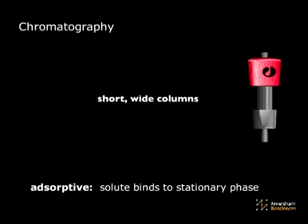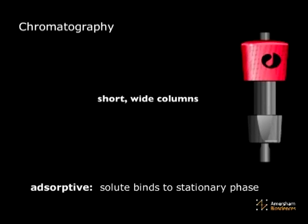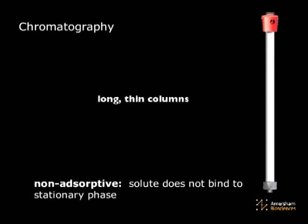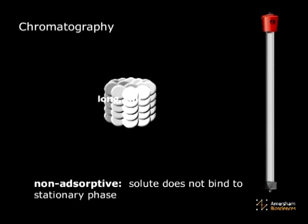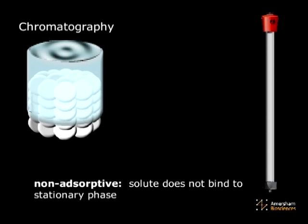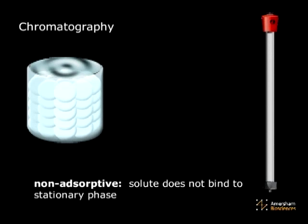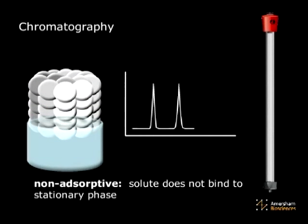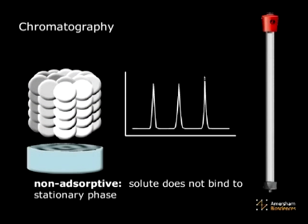Columns for adsorptive chromatography are generally short and wide. In contrast, gel filtration requires long, thin columns for the proper diffusion of molecules in and out of the chromatographic medium. Molecules in the non-adsorptive technique do not bind to the media, but are eluted in descending order of molecular size and shape.